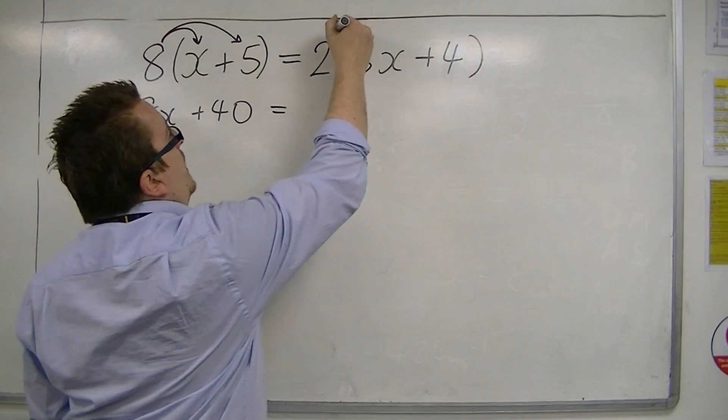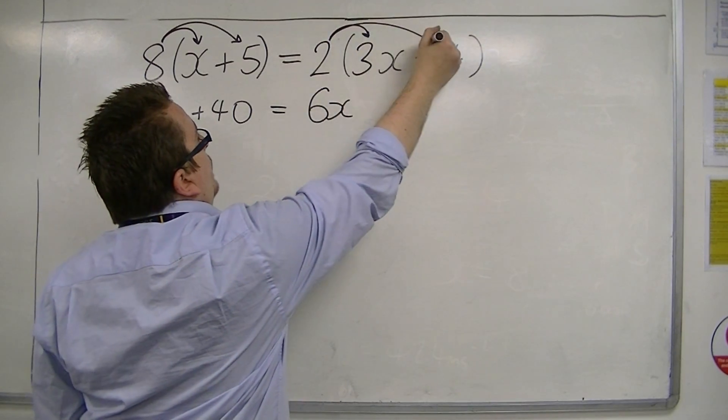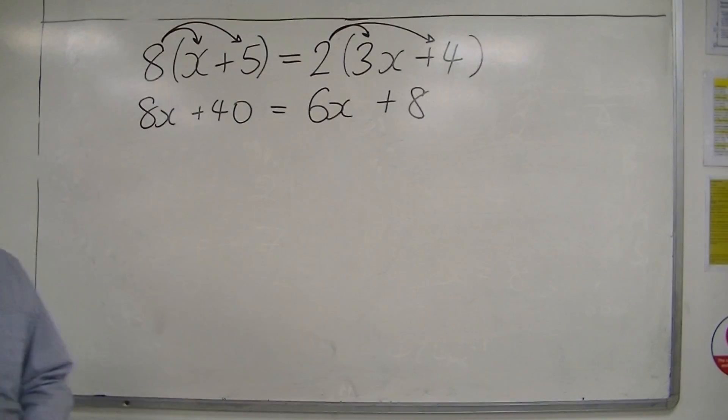On the right-hand side, we have 2 lots of 3x, well, that's 6x, and 2 lots of 4, well, that's 8. Okay, getting somewhere. So it can at least get us a mark.